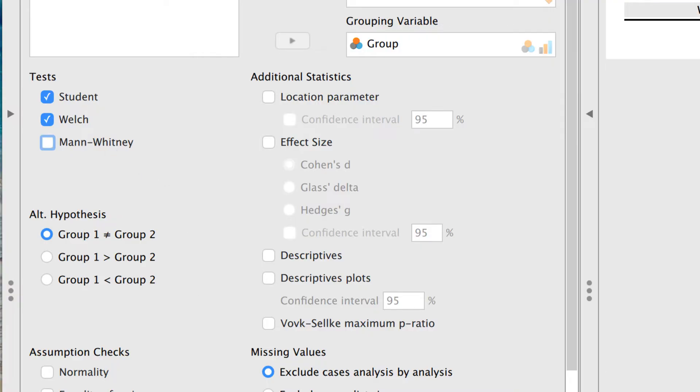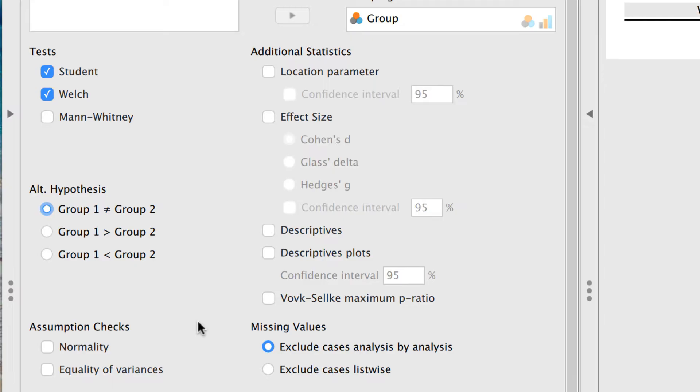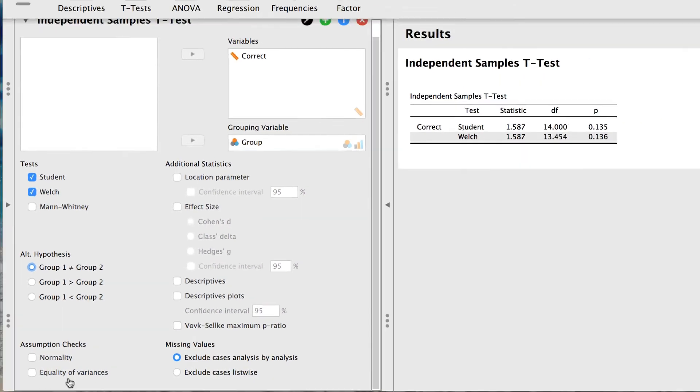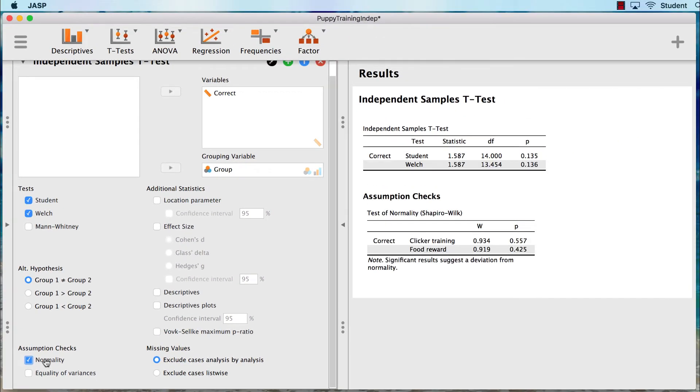You may recall from step 2 that our alternative hypothesis is that the means of the two groups are not equal. We could also choose a one-tailed test option here if we wanted to. I would, however, like to establish that the assumptions of the test have been met. The two assumptions of the independent samples t-test are normality and equality of variances. I can check the assumption of normality with a Shapiro-Wilk test, and it should be non-significant, indicating that the distributions are not different than a normal curve.